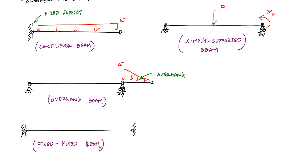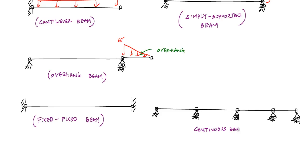Other types include a fixed-fixed beam or a continuous beam — a really long beam that continues, used to model bridge structures or floor beams in a building. Fixed-fixed and continuous beams are not normally studied in a first course in mechanics of materials because they are statically indeterminate to more than one degree, requiring additional techniques you'd encounter in a structural analysis course.